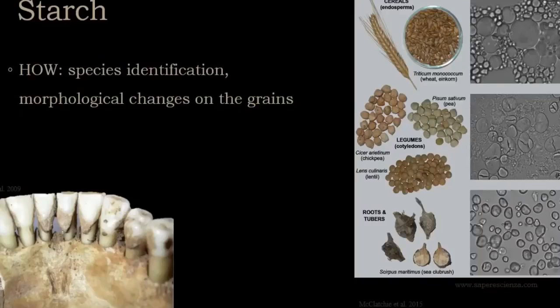Same as pollen grains and phytoliths, starch grains are also species-specific and can be used for taxonomic identification. Here you can see starch grains observed under a petrographic microscope with their different sizes, shapes, and other characteristics. On the top photo are the starch grains from anchored wheat, in the middle starch coming from seeds of peas, and on the bottom from tubers of sea club rush.